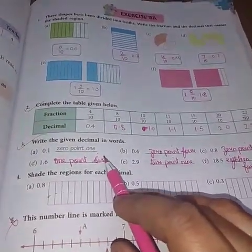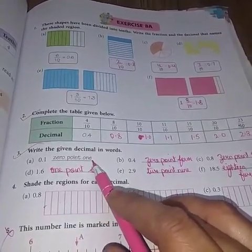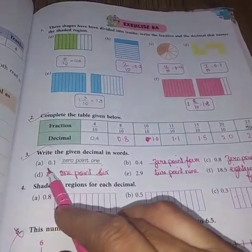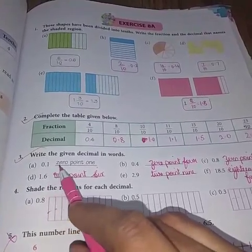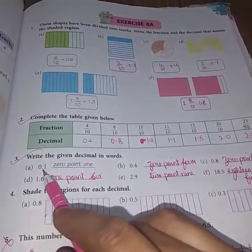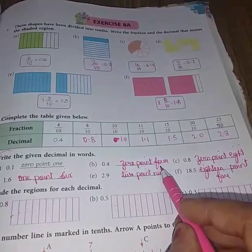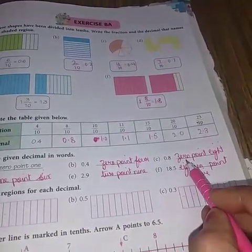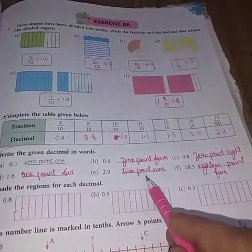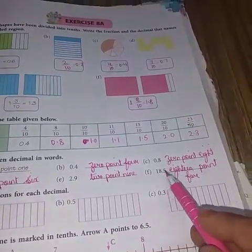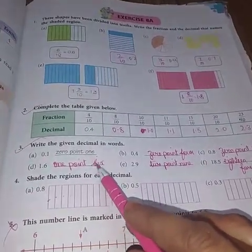Now here in question number 3, we will learn how to number name it. Aap kaise isko words mein likhenge. As we are speaking, same we have to write. It is called 0.1. That means we have to write down the spelling of 0, spelling of point and then spelling of 1. This is 0.4. This is 0.8. This is 1.6. This is 2.9 and this last one is 18.5. All these questions you have to do in book only. All three.